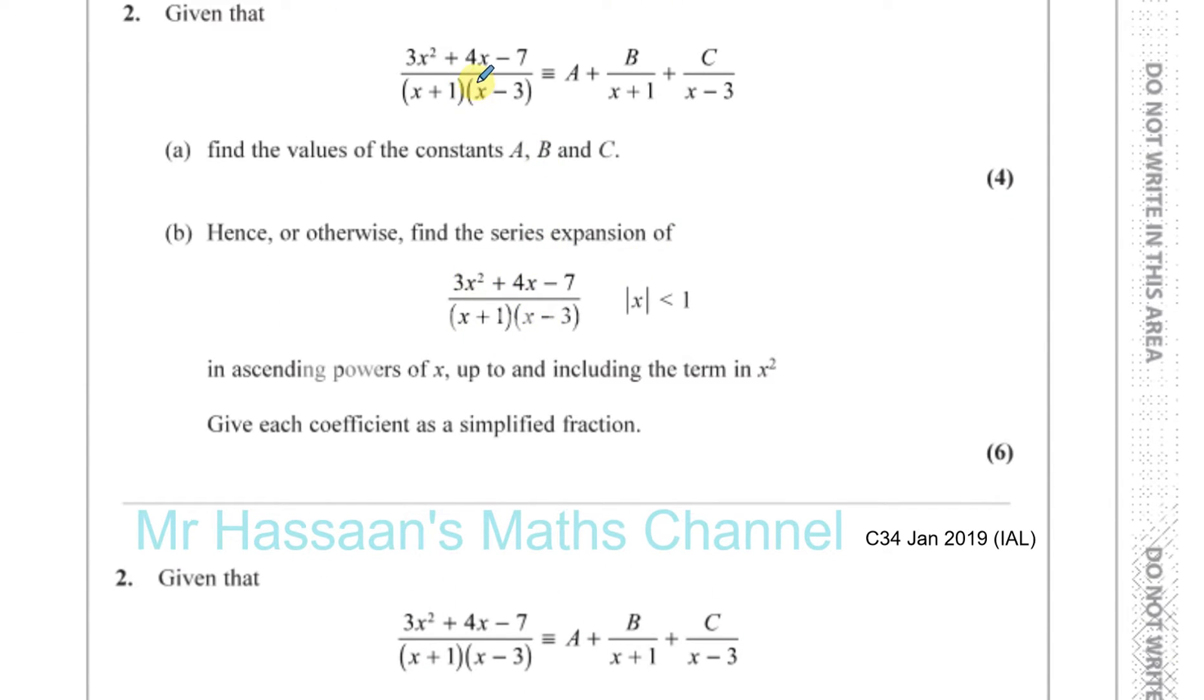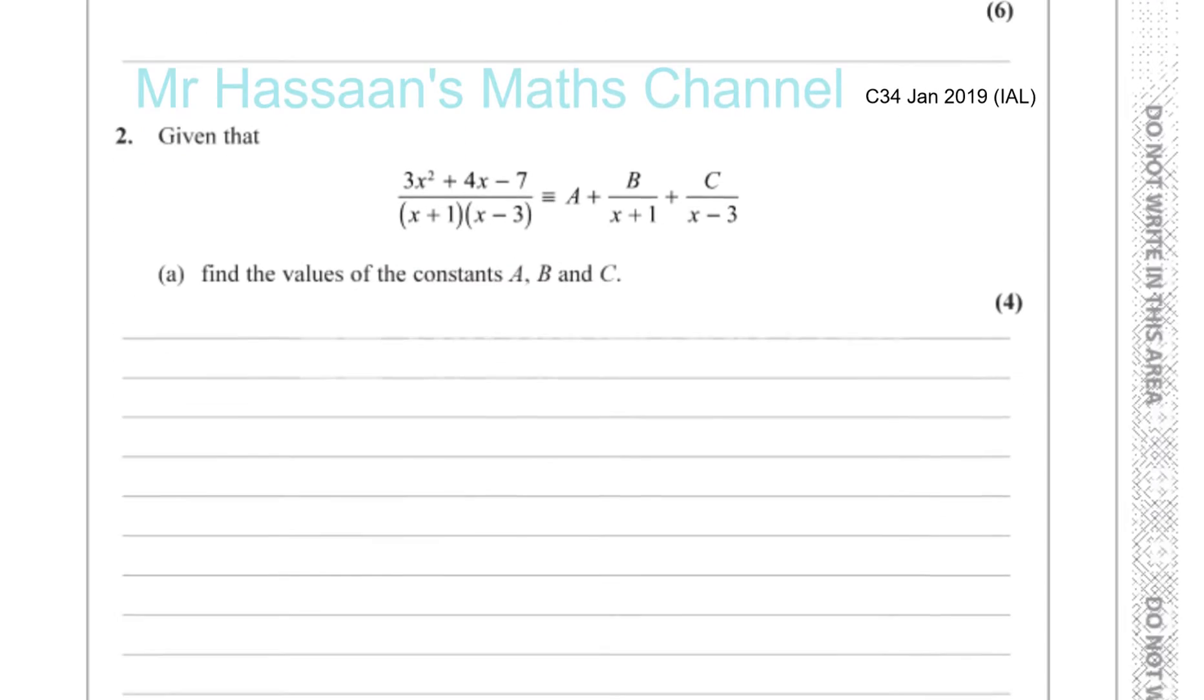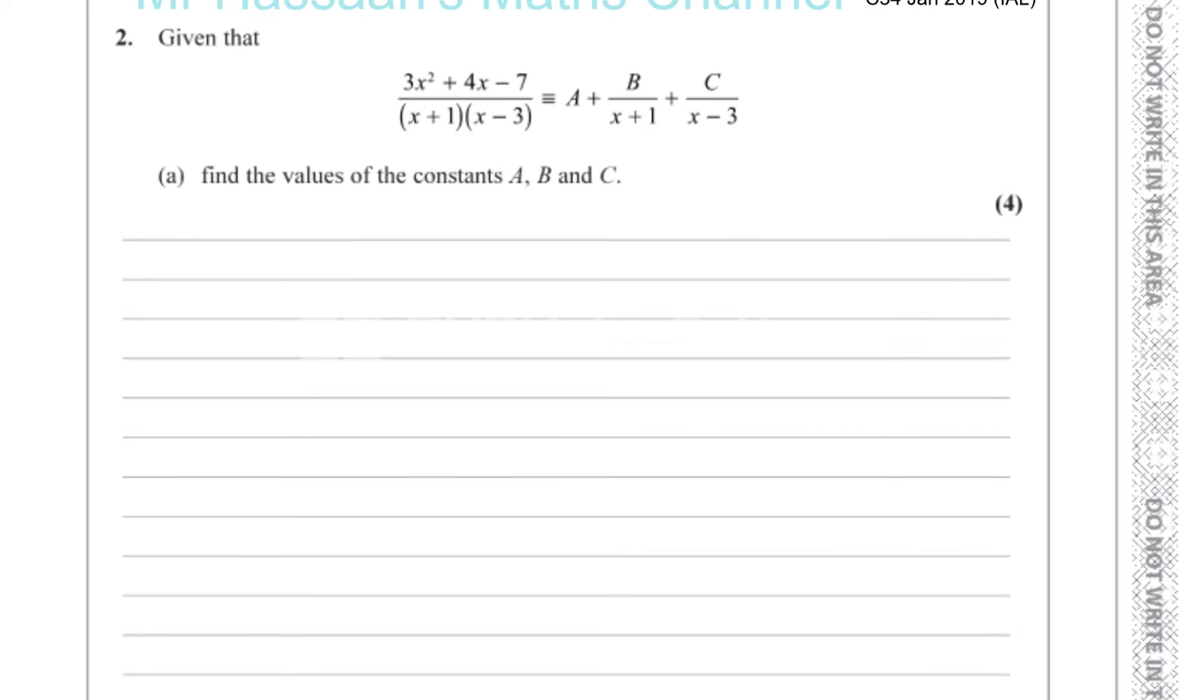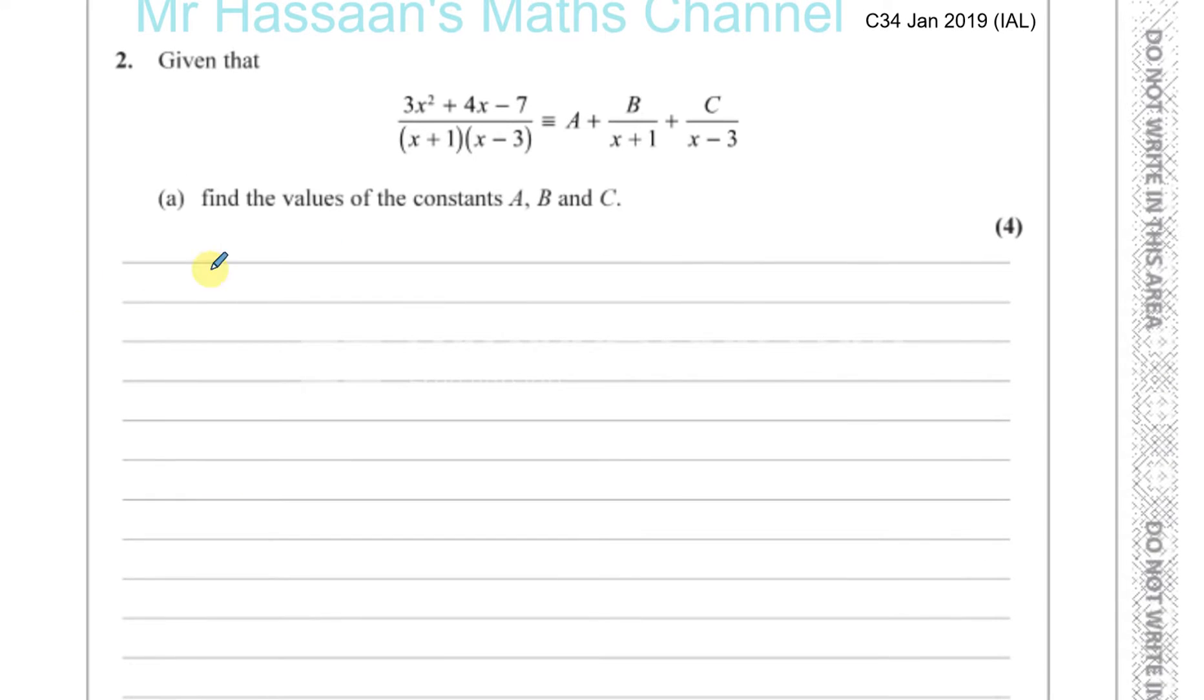Then we have to use that to find the series expansion of what they gave us. This is something which we use binomial expansion for. Let's start off by splitting up this fraction into separate fractions, partial fractions. In order to do this, they already gave us the form here, so there's not much to do in that sense.